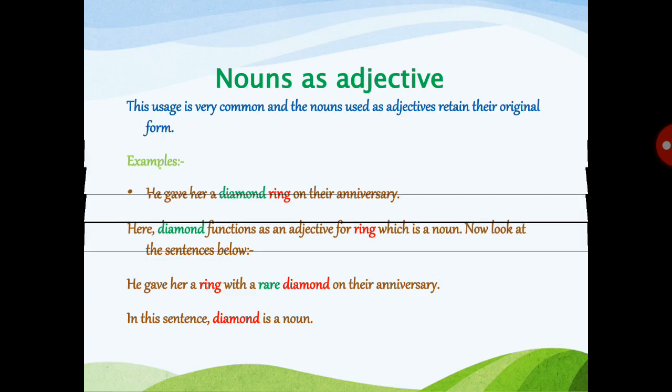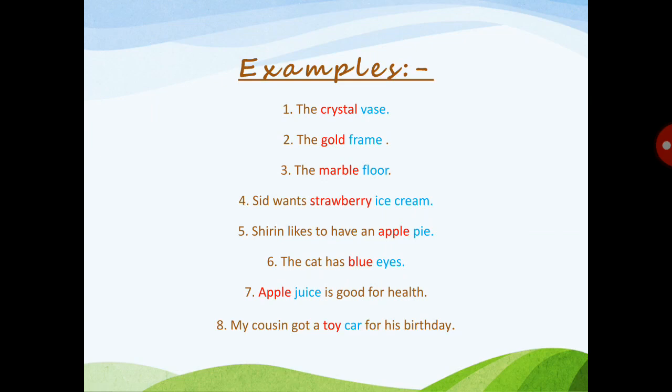More examples: 'The crystal vase' — 'crystal' is a noun and 'vase' is also a noun, but since 'crystal' comes just before the second noun 'vase,' it acts as a noun functioning as an adjective. 'The gold frame' — 'gold' is also a noun and 'frame' is also a noun. Since there are two nouns, the first one acts as an adjective, so 'gold' is the noun acting as an adjective and 'frame' is just a noun.